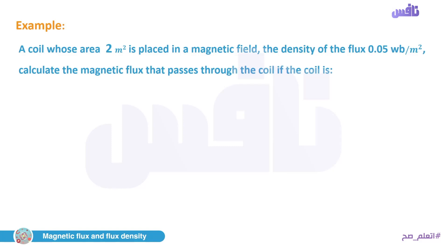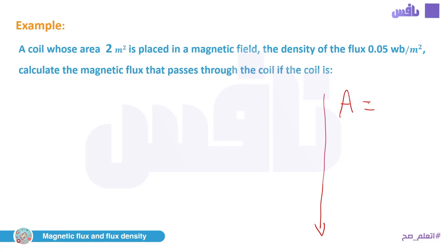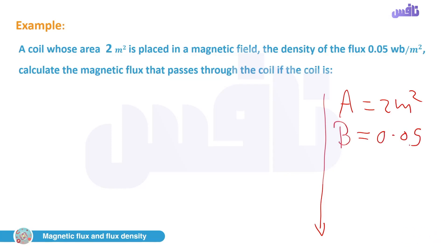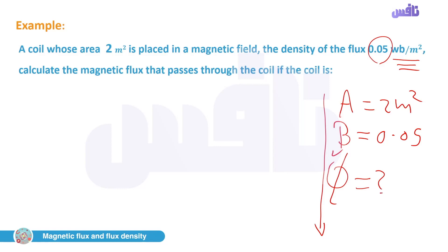Let's take a simple example to link the information to problem-solving. Example one: a coil of area 2 m² is placed in a magnetic field with flux density B = 0.05 Tesla. Calculate the magnetic flux through the coil for different cases.